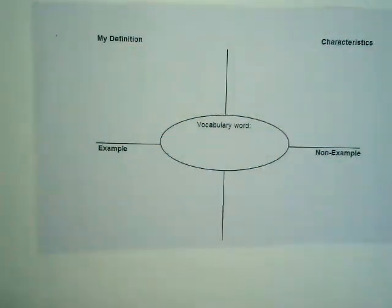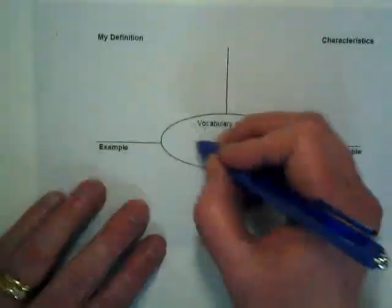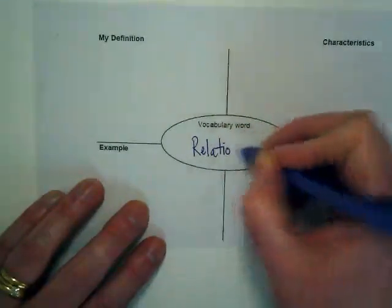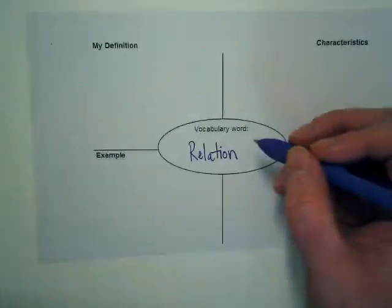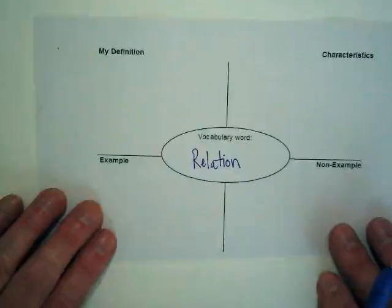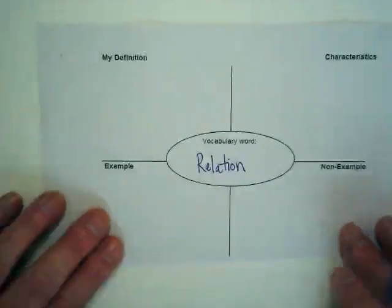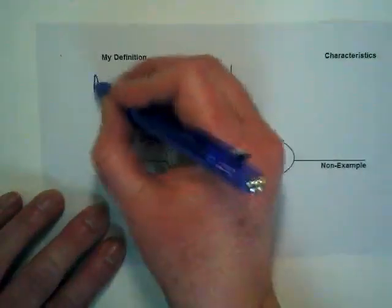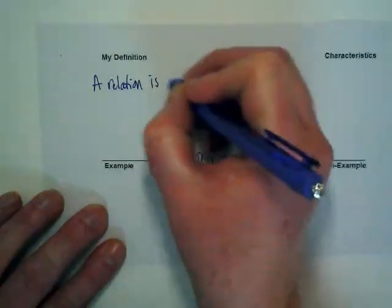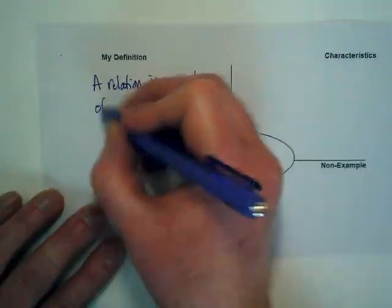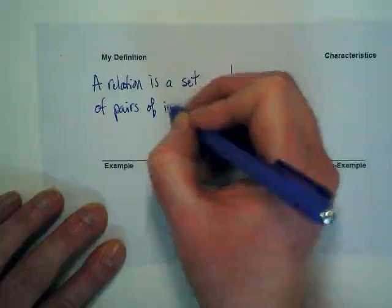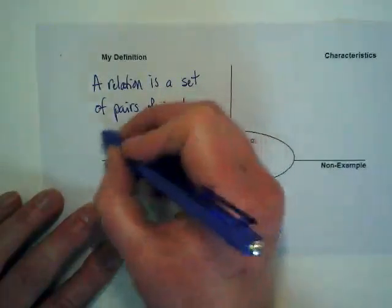The word that we are working with first is relation. Here's the definition I would like you to write down. A relation is a set of pairs of input and output values.